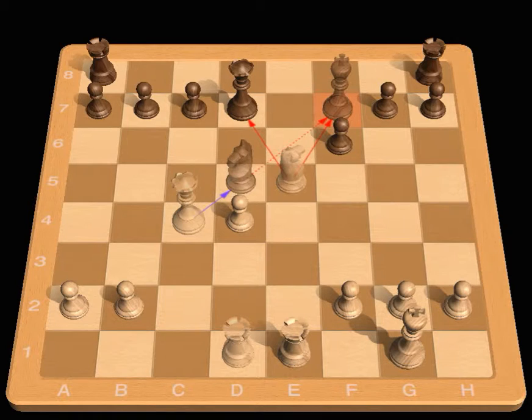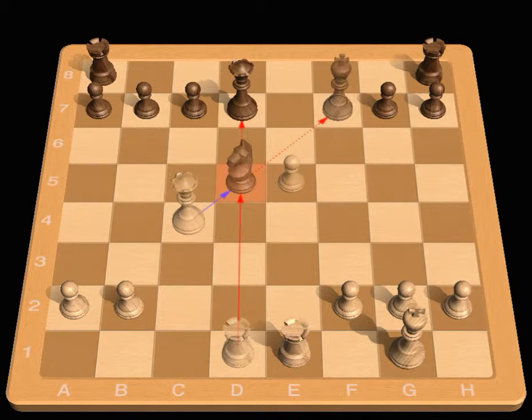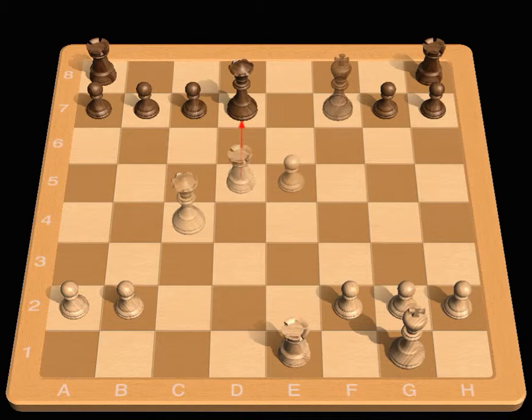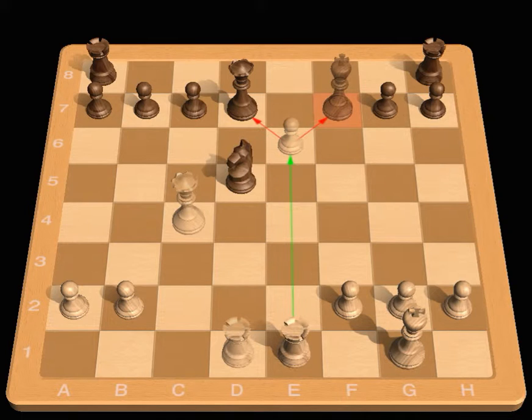f captures e5, d captures e5, and Black cannot meet the two threats of Rook captures d5 and e6 check.